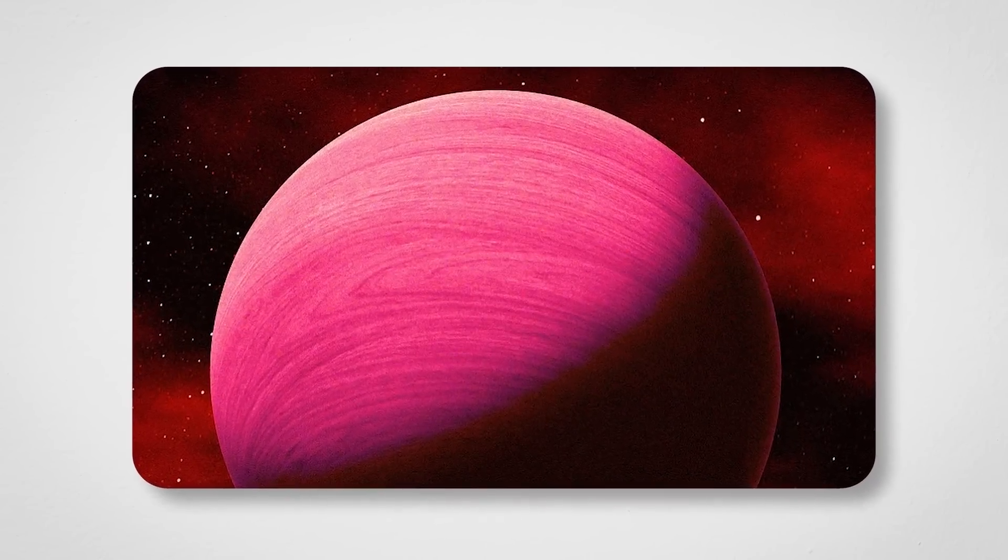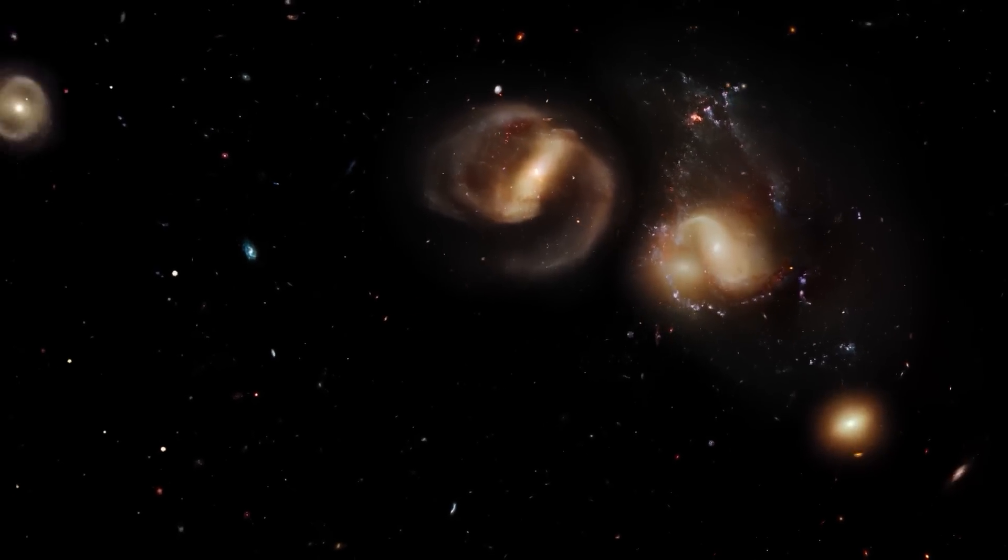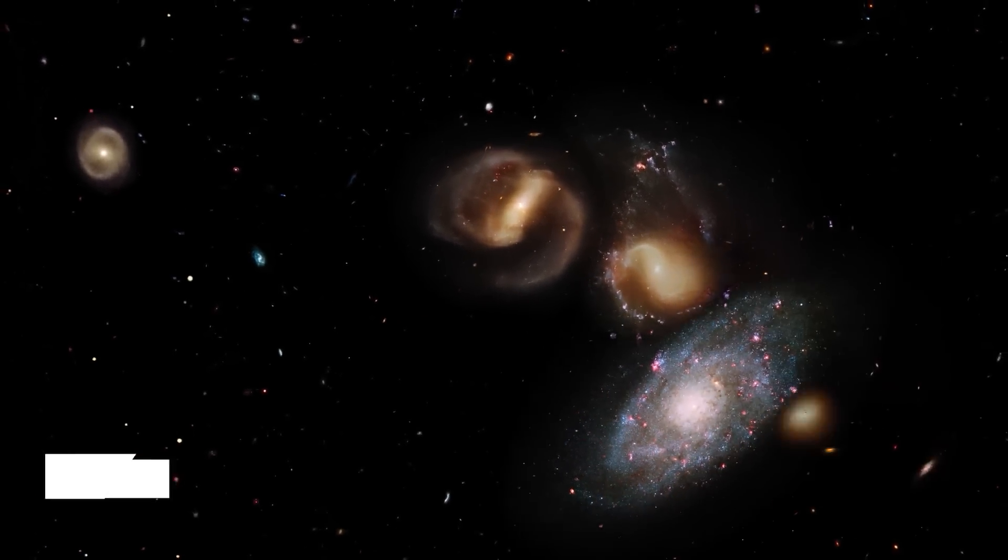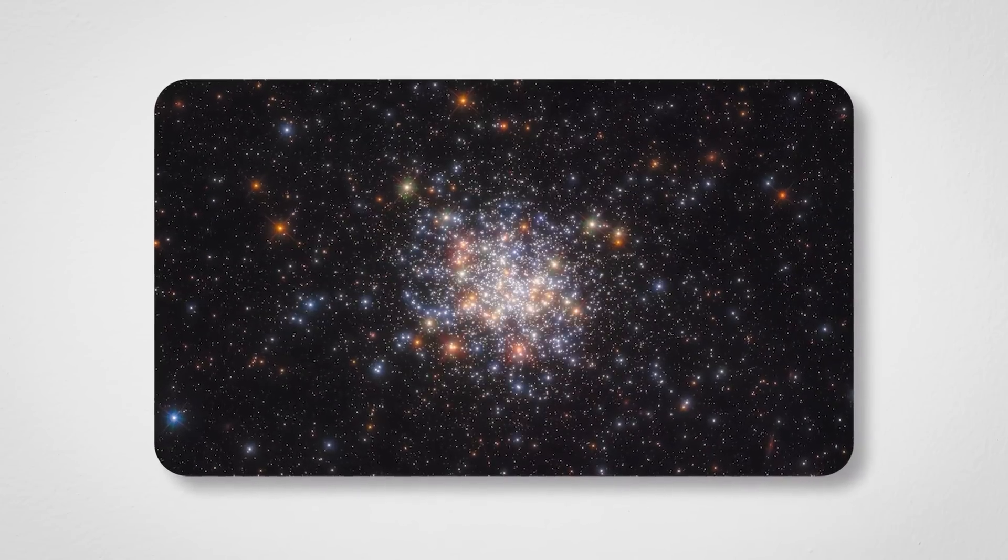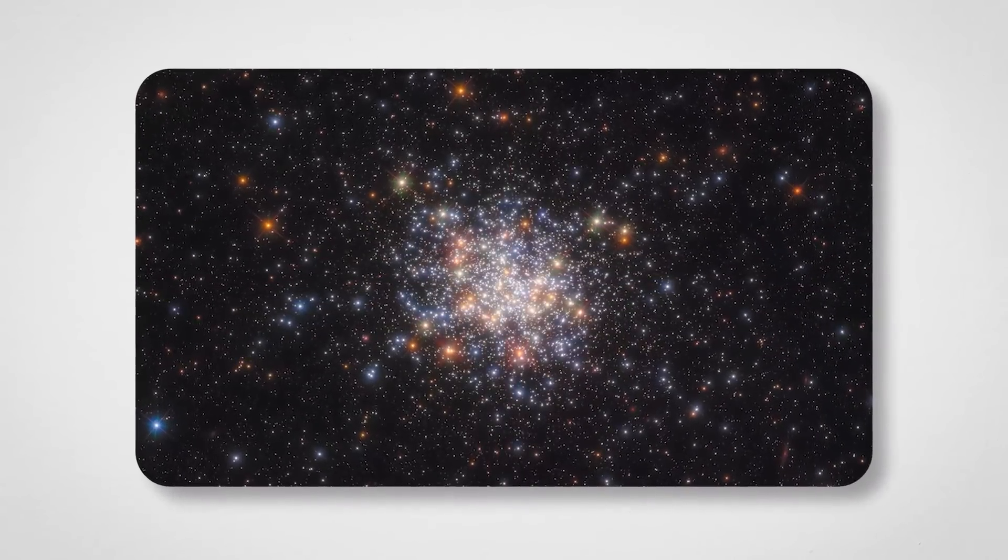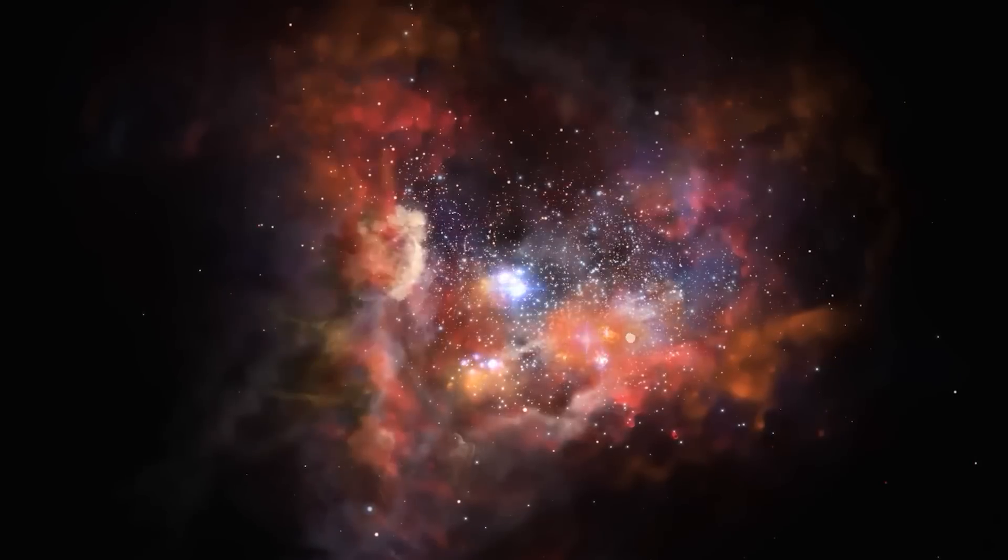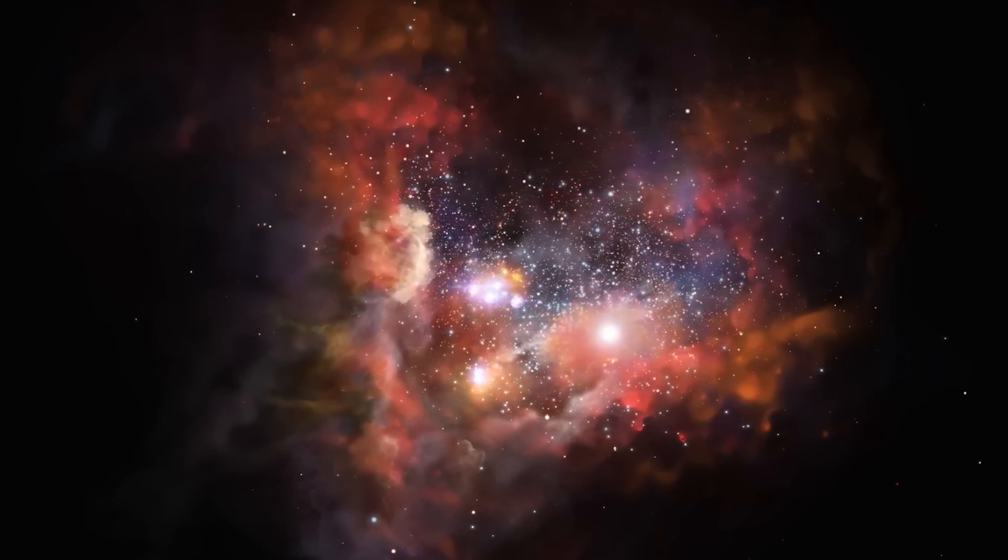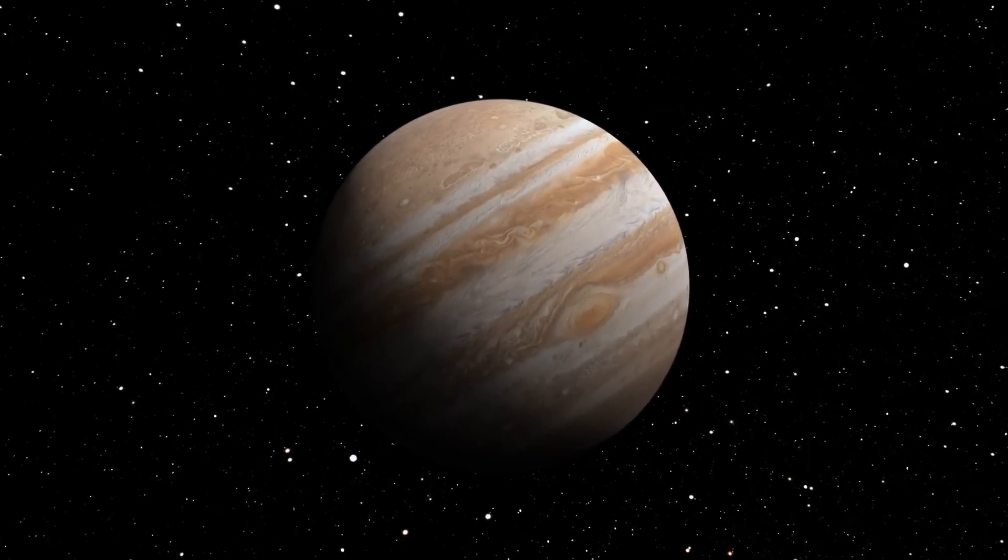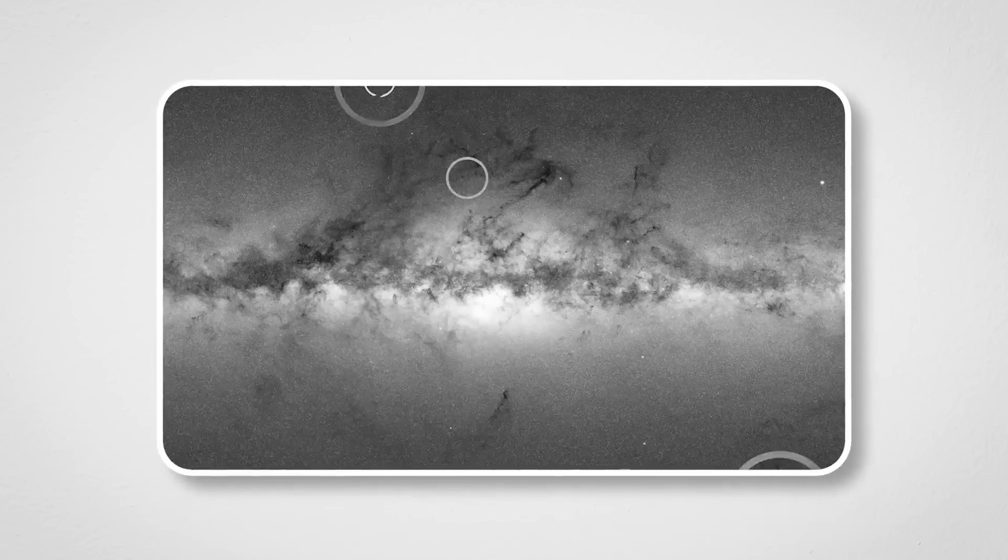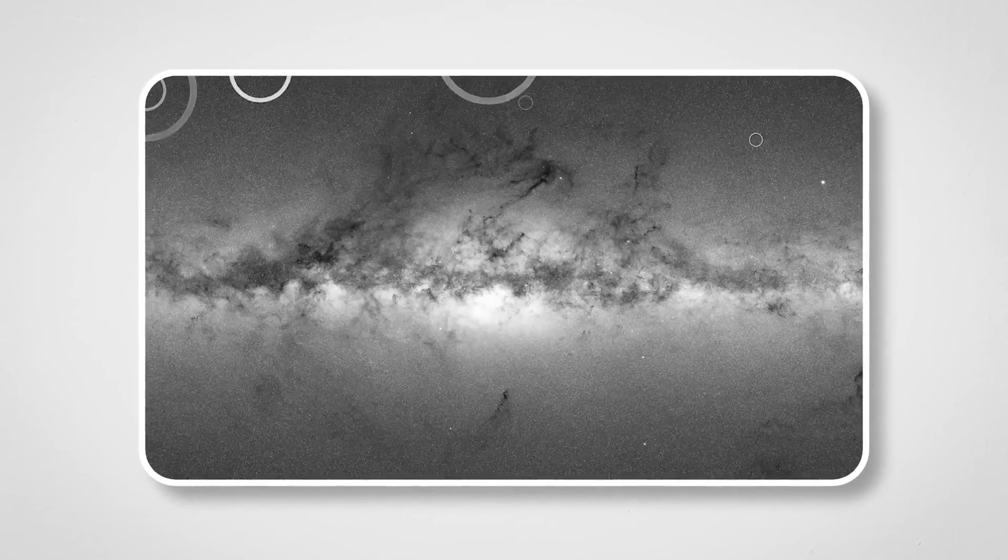Gliese 504b was initially mistaken for a brown dwarf back in 2016. Why? Because it's a massive planet. Turns out though, it's just too small to be classified as a brown dwarf. But don't let 'too small' fool you. This thing's a beast. It's 1.2 times wider than Jupiter and over 12 times heavier. If planets could flex, this one would be doing it nonstop.